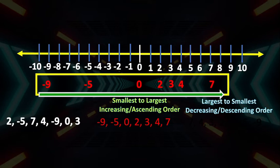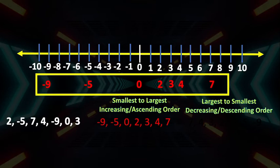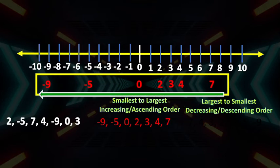If we're going to arrange them from largest to smallest, or in decreasing or descending order, all we have to do is write the numbers from right to left. So the largest integer is 7, then 4, 3, 2, 0, negative 5, and negative 9.